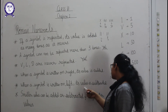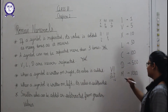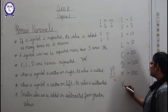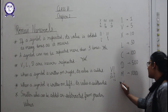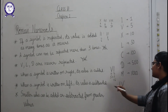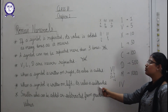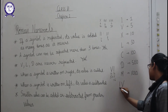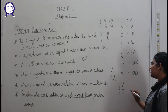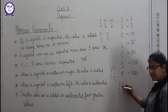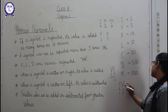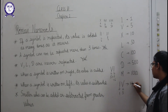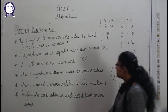The next rule: if a symbol is written on the left, its value is subtracted. For example, placing I on the left side of V: V is five and I is one, so five minus one equals four, because I is on the left side. So IV is the symbol for four.